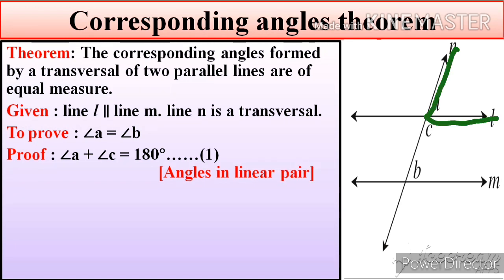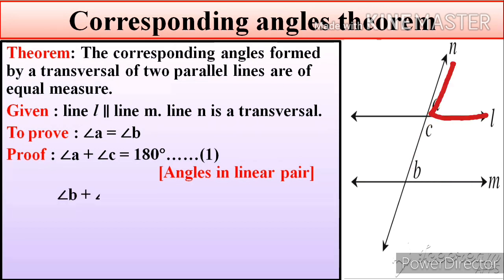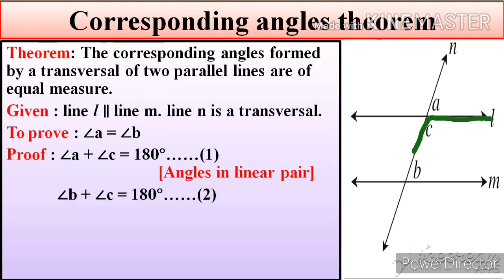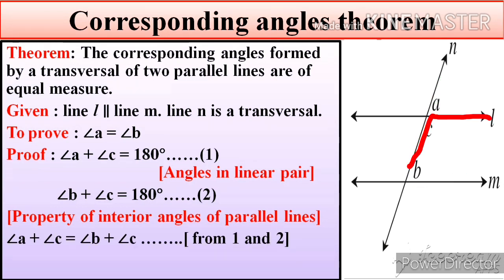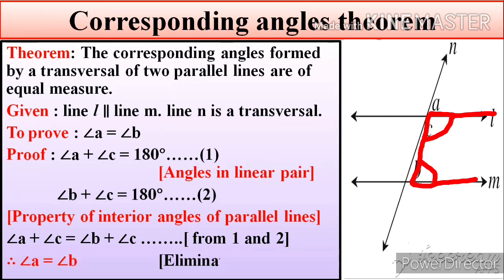Here we have to prove that angle A is equal to angle B. In the figure, angle A plus angle C equals 180 degrees — equation number one — as they are angles in a linear pair. Angle B plus angle C equals 180 degrees — equation number two — by the property of interior angles of parallel lines.